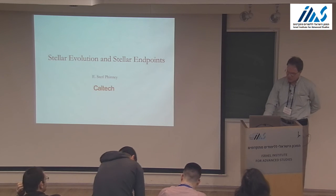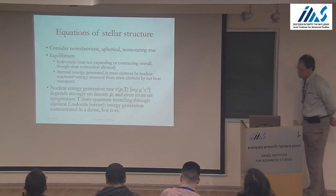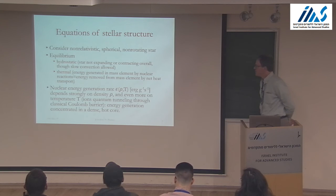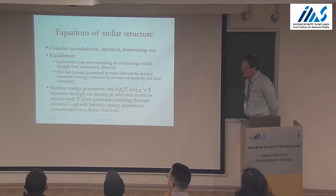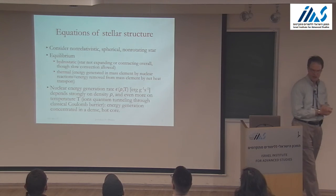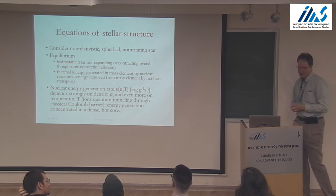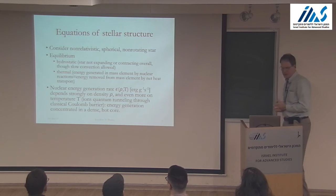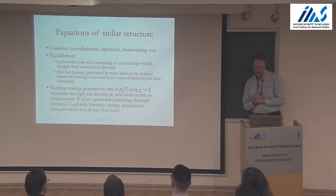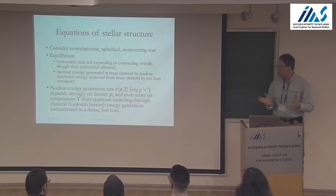So let's start in with the transients. We'll start with the equations of stellar structure. In the simplest version, we'll consider non-relativistic stars initially — so no general relativity; we'll get to that later with neutron stars. We'll say the stars are spherical, not rotating, and in equilibrium.